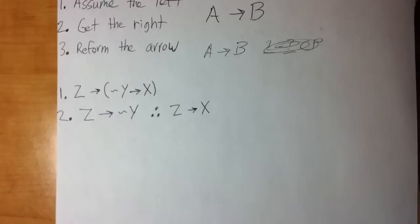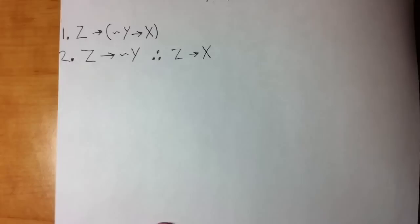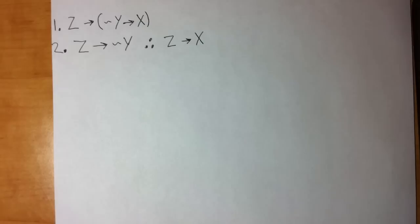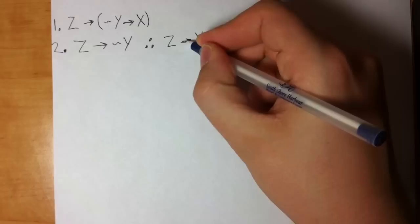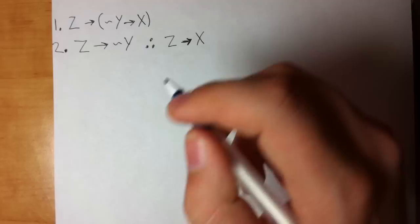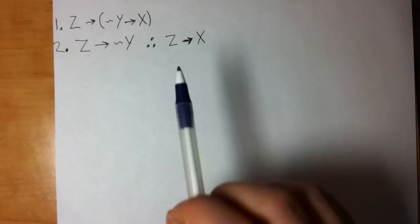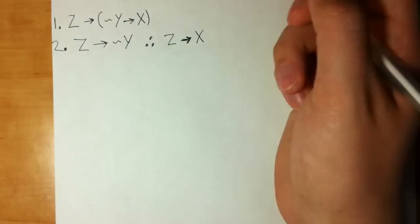The first proof we're going to do is really pretty straightforward. Looking at the premises and conclusion, I'm thinking about how I know to use CP. There's a really good clue: any time you have a conditional conclusion — where the arrow is the main connector — you can use CP, because that's going to let you form the arrow. So I see this and I'm automatically thinking I'm going to use CP.